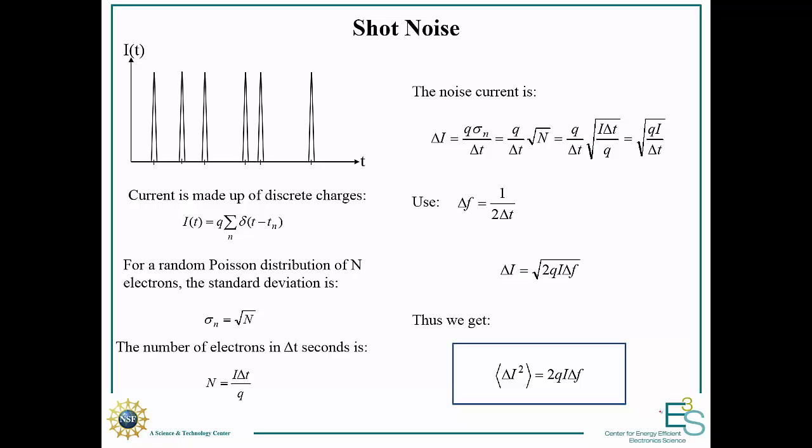Shot noise is due to the random arrival of electrons. If you have some average current and look at it as a function of time, this current is actually made up of random discrete pulses corresponding to the arrival of individual electrons. This is a random Poisson process. What that means is that the standard deviation in the current is proportional to the square root of the number of electrons.